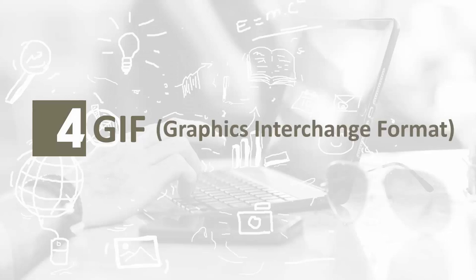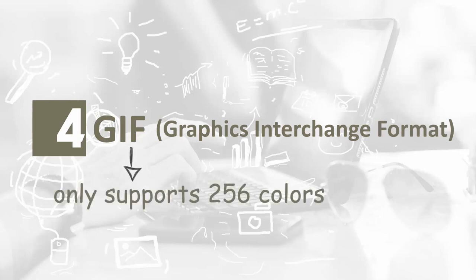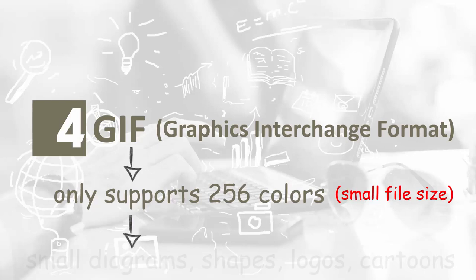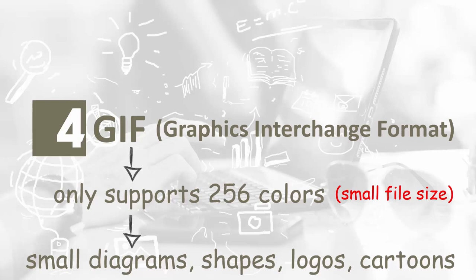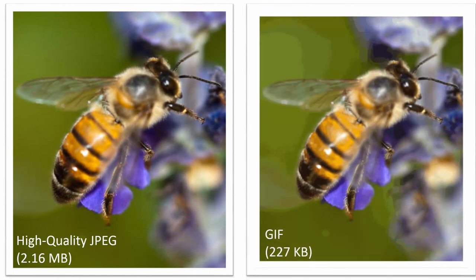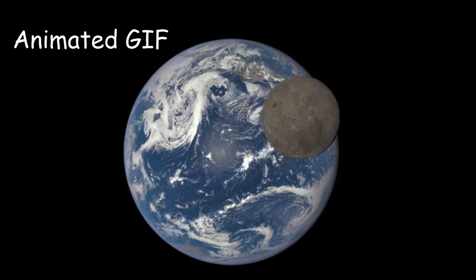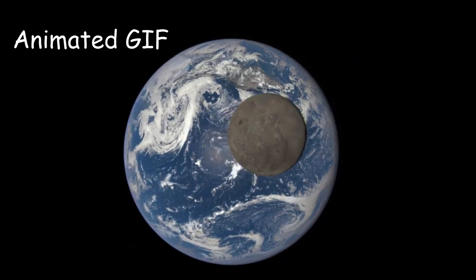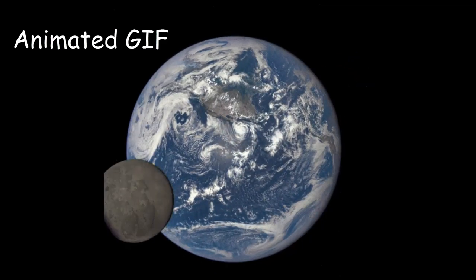GIF stands for Graphics Interchange Format and is pronounced GIF by some and JIF by others. This image format only supports 256 colors, which makes the file size of GIF images relatively small compared to JPEGs. This format is most suitable for small graphics with few colors such as simple diagrams, shapes, logos, and cartoon-style images, but not for photos taken with a digital camera. These images show a comparison of a high-quality JPEG on the left and a GIF image on the right. The GIF image format is quite popular on the internet because of its small size and its support for simple animation effects.